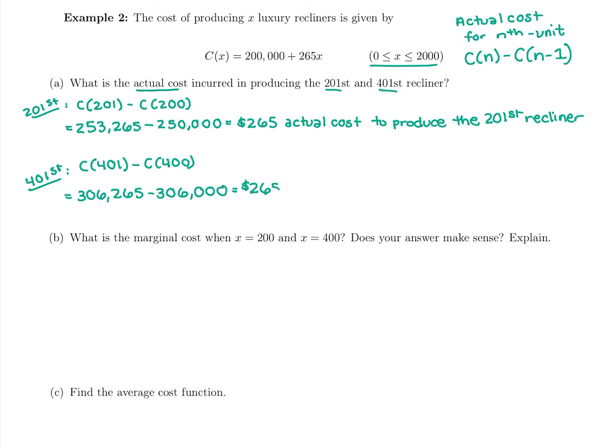So that's our actual, and because we plugged into C that's cost. We're going to be plugging into P later and that's profit, and R is revenue. So we have $265 is the actual cost to, and for cost it's for producing or making, so to make the 401st recliner, just that 401st one costs an extra $265. So they would compare that to what they're able to sell it for to see if it's worth it.